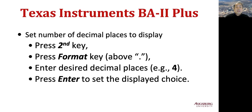Before moving on, let's learn how to use the financial calculator. This class requires you to have a Texas Instruments BA2 Plus calculator. Before using it, we need to set up two things. First, we need to set the number of decimal places to display. The default number of decimal places is two, which is too few. Let's increase it to four decimal places so that we can answer accurately.